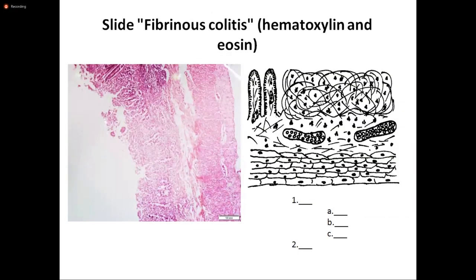Light fibrinous colitis, stained with hematoxylin and eosin. This is page number 72, picture number 47. Number one shows fibrinous pseudomembranes.